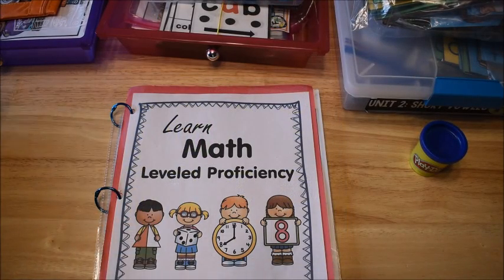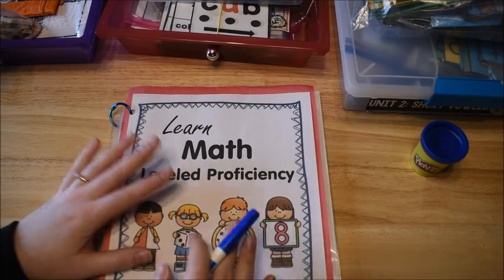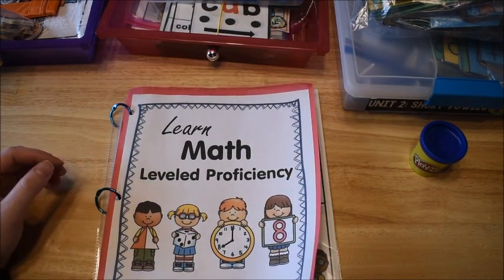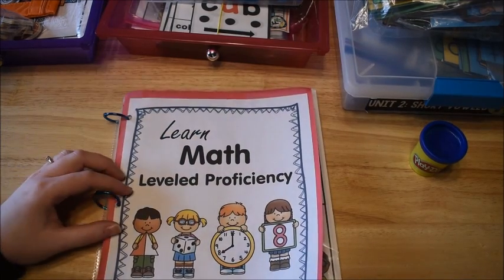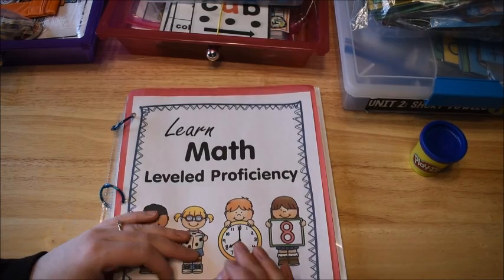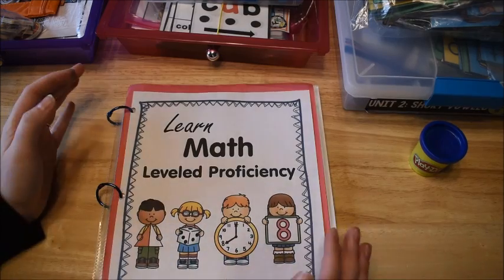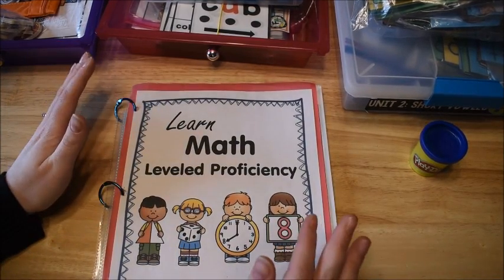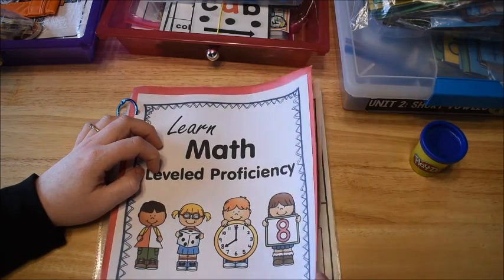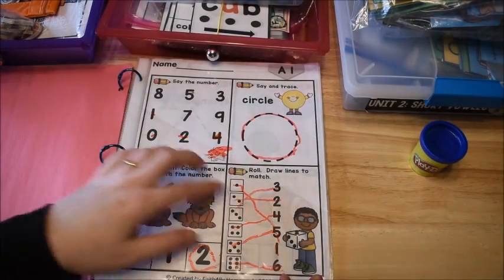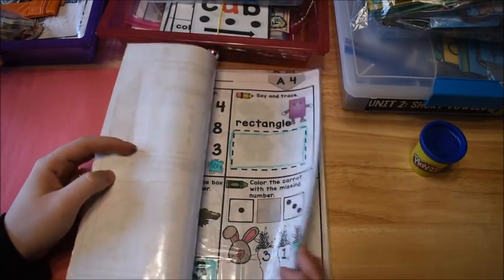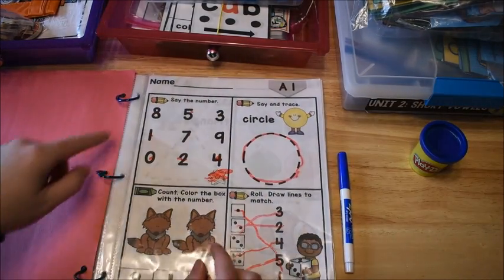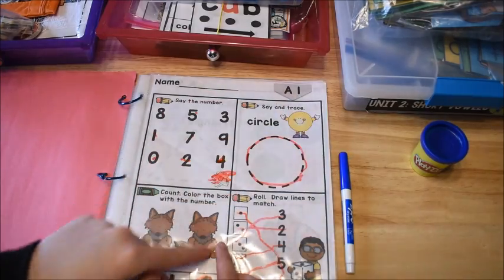Another thing I wanted to show you for math this week is we still are using our Learn Math Level Proficiency Sheets. We use these along with my Early Learner's Math Curriculum. There's two levels — Level A and Level B. Here you can see one of my kiddos did this page and we just haven't erased it yet. I have them in little plastic sleeves so we can use dry erase markers over and over again, but you can print them out in black and white and just use them as worksheets, or even cut them up into squares and use them as activity cards.